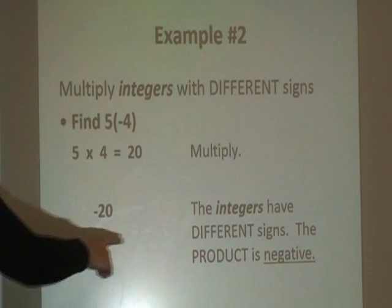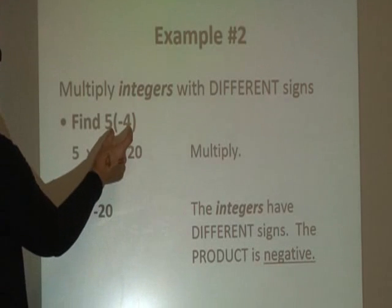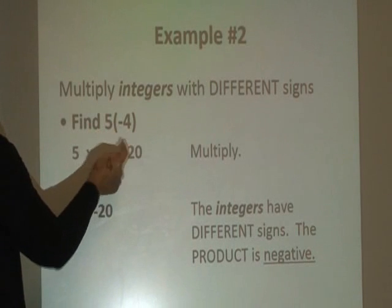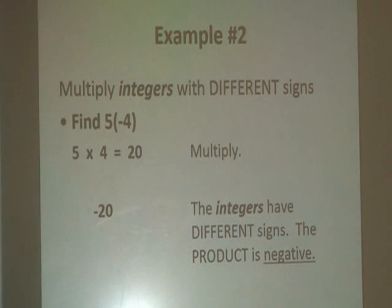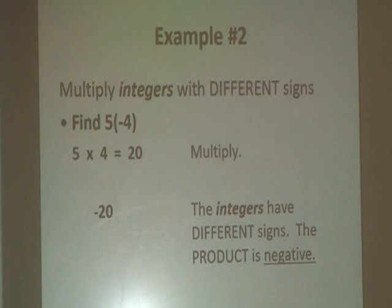And now let's check our sign in the end. The integers have different signs in the problem. One is positive, one is negative, so the product is in fact going to be negative. So 5 times negative 4 is negative 20.